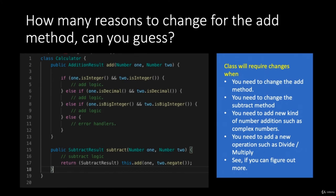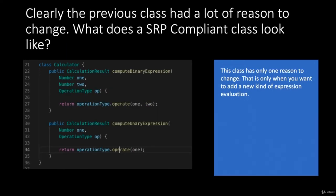Even if you add an additional method for ternary expressions, the responsibility of the class remains the same — this won't increase the number of reasons for the class to change. Let's look at the previous code again. Is it really the calculator's responsibility to perform the actual addition? On a higher level it is, but if you dive deep, your calculator doesn't add numbers. It just takes your input and displays the results. It is just an interface. The actual addition happens inside the IC or chip — it's not the calculator's responsibility.